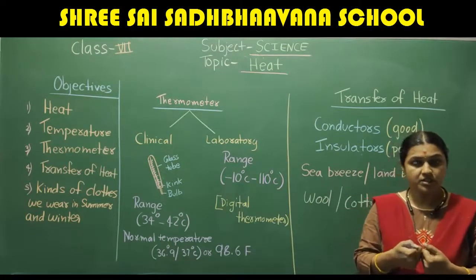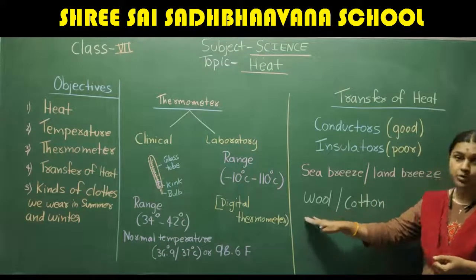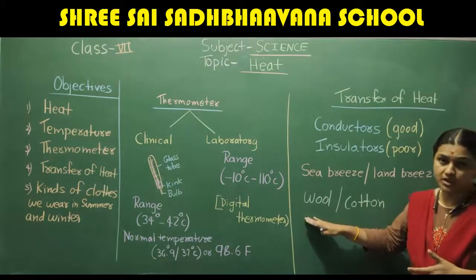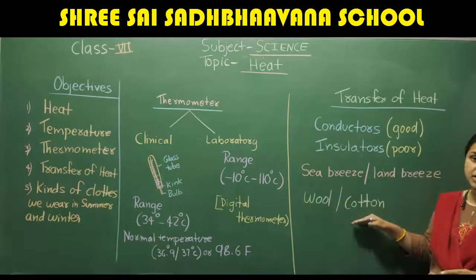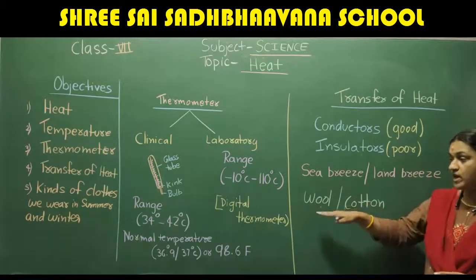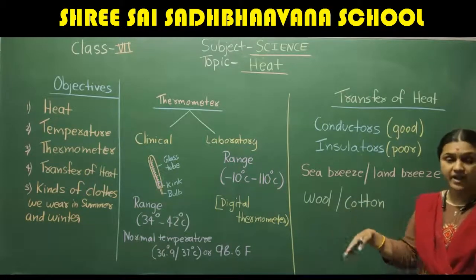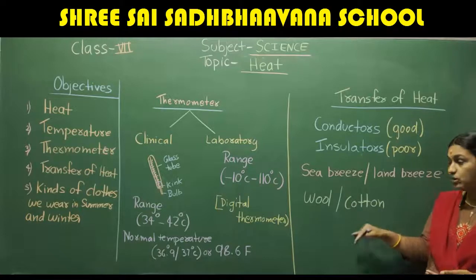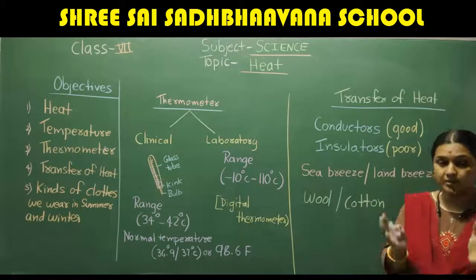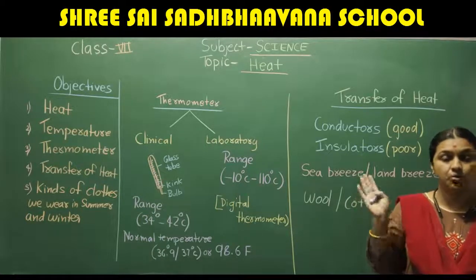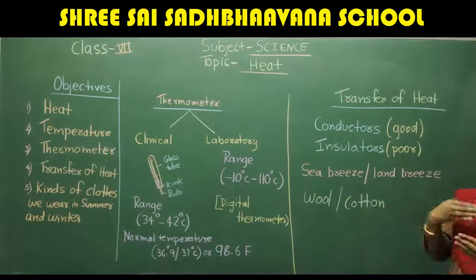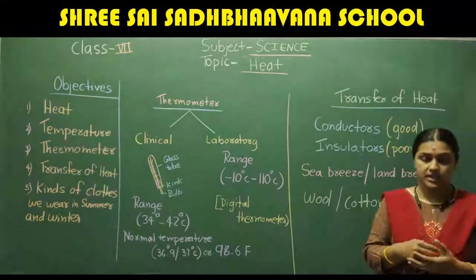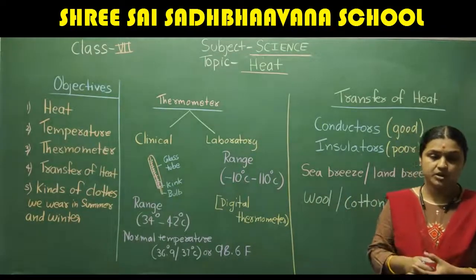So we wear woolen clothes in winter and cotton clothes in summer. One is a bad conductor of heat and the other is a good conductor of heat. Depending on the climatic and weather conditions, we wear the appropriate cloth — dark-colored in winter and light-colored in summer.